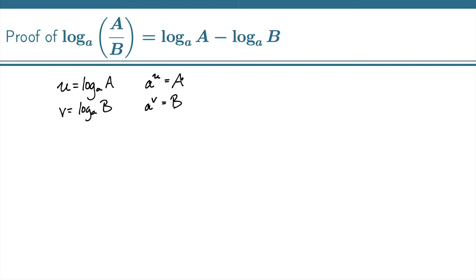Now I'm looking for division, a over b. So I'm going to go ahead and do that. A over b is equal to, well that's a to the u, a to the u over a to the v.